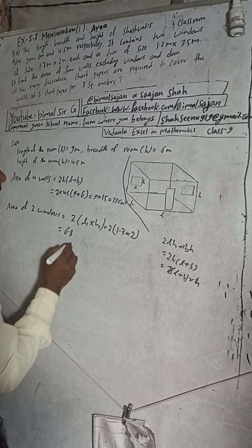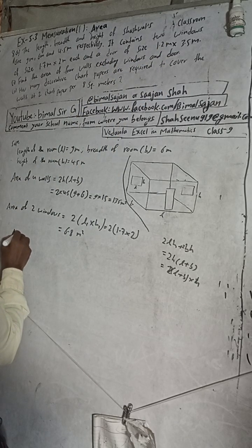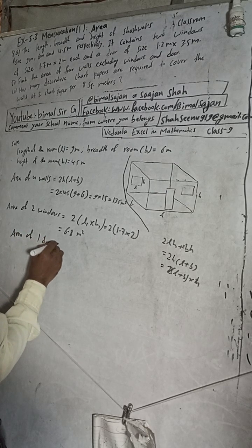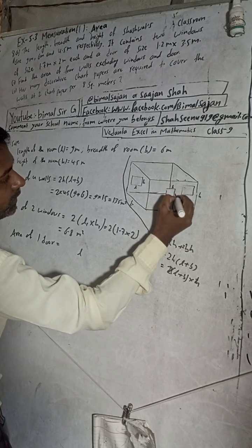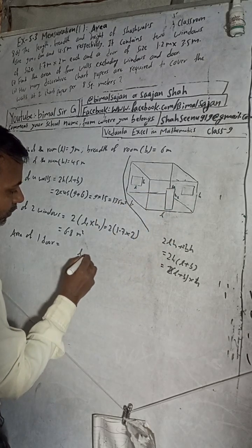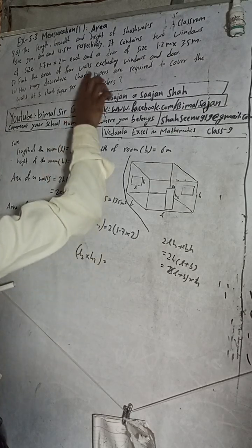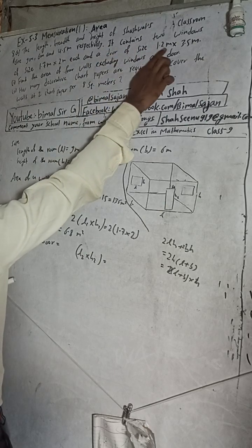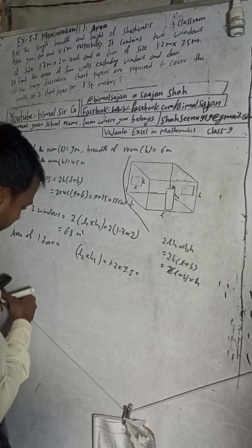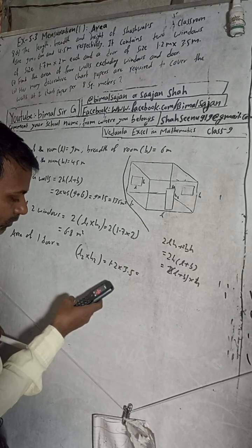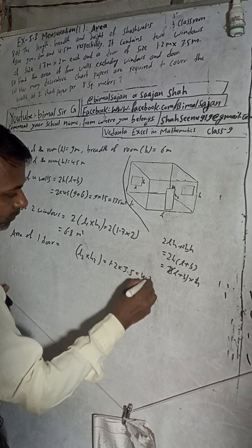In the same way, there is one door. Area of one door: since there is only one door, no need to multiply by two. Door size is given as 1.2 × 3.5. So 1.2 × 3.5 = 4.2 square meters.